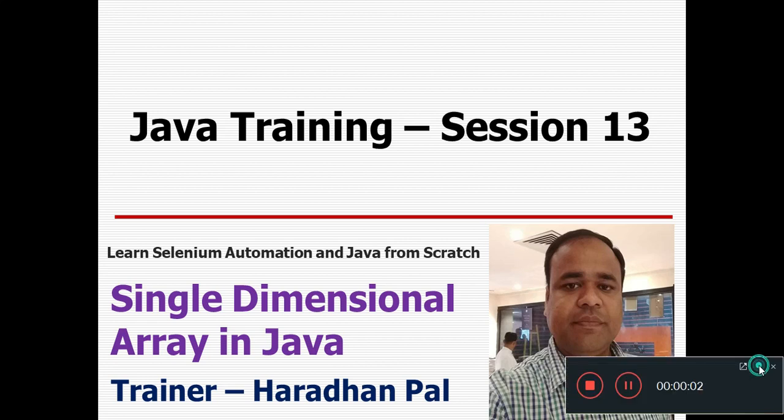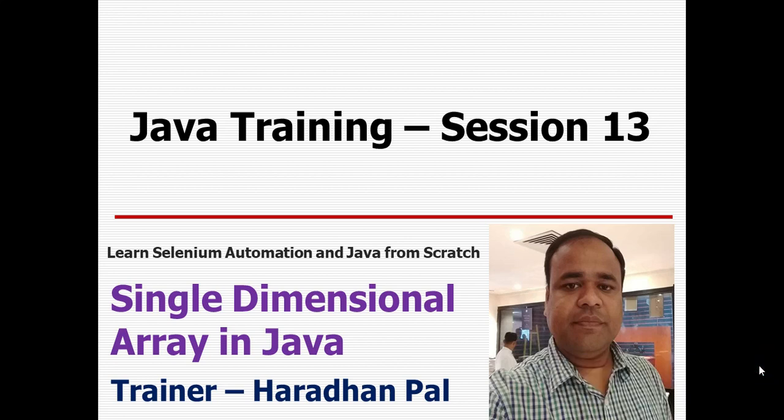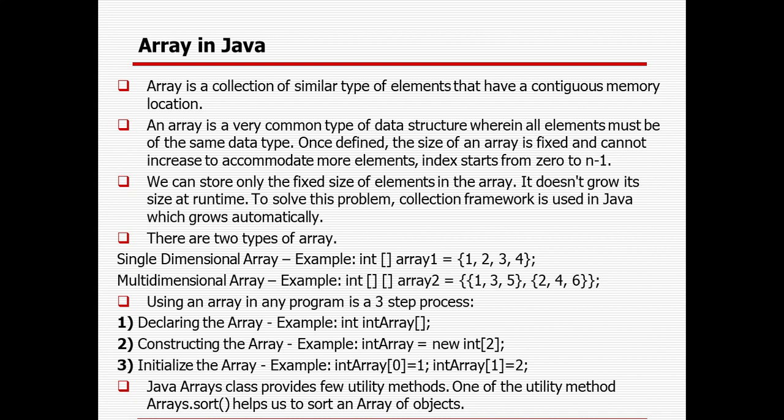Hello friends, welcome to Java training session 13. This is Haradhan once again to let you know the importance of single dimensional array in Java. So what is array in Java? Array is a collection of similar type of elements that have contiguous memory locations. Array is a very common type of data structure wherein all elements must be of the same data type. Once defined, the size of the array is fixed and cannot increase to accommodate more elements. The index for the array starts from 0 to n-1.